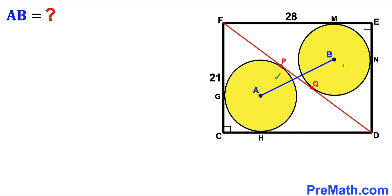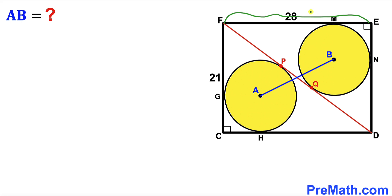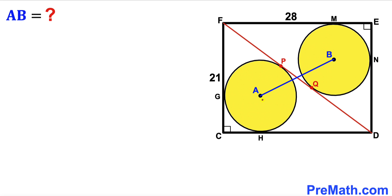In this video we have two identical circles fully inscribed in a rectangle CDEF. DF is the diagonal of this rectangle, and P and Q are the points of tangency. A and B are the centers of the identical circles. The side length CF is 21 units, EF is 28, and M, N, H and G are also points of tangency. Our task is to find the distance between the two centers A and B.